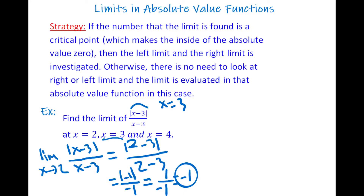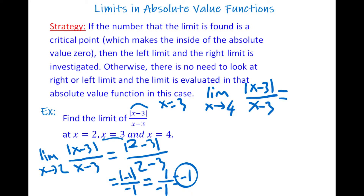Now the limit as x goes to 4 of |x − 3| / (x − 3). Just put 4 instead of x: |4 − 3| / (4 − 3) = 1 / 1 = 1. So the limit is 1.